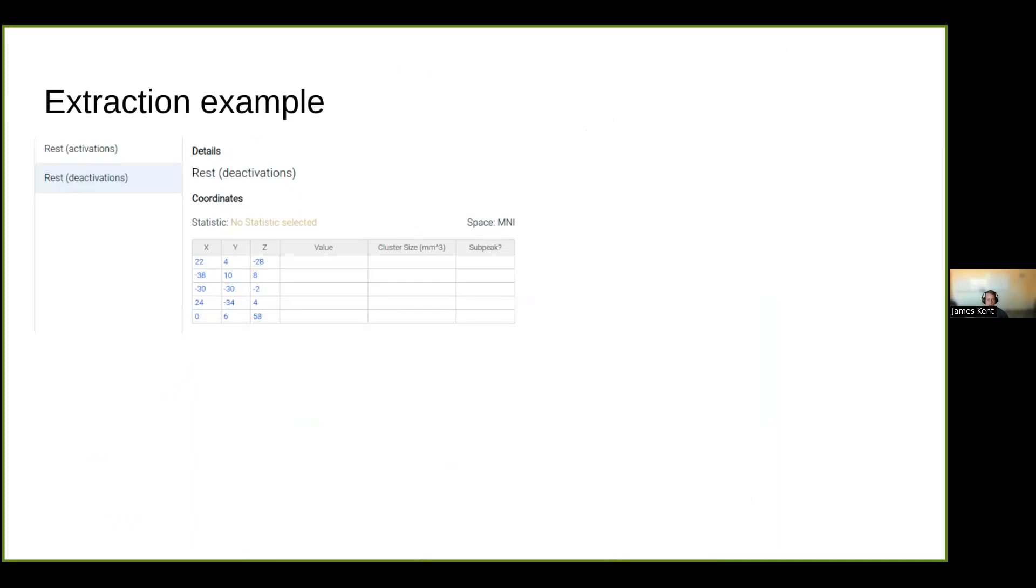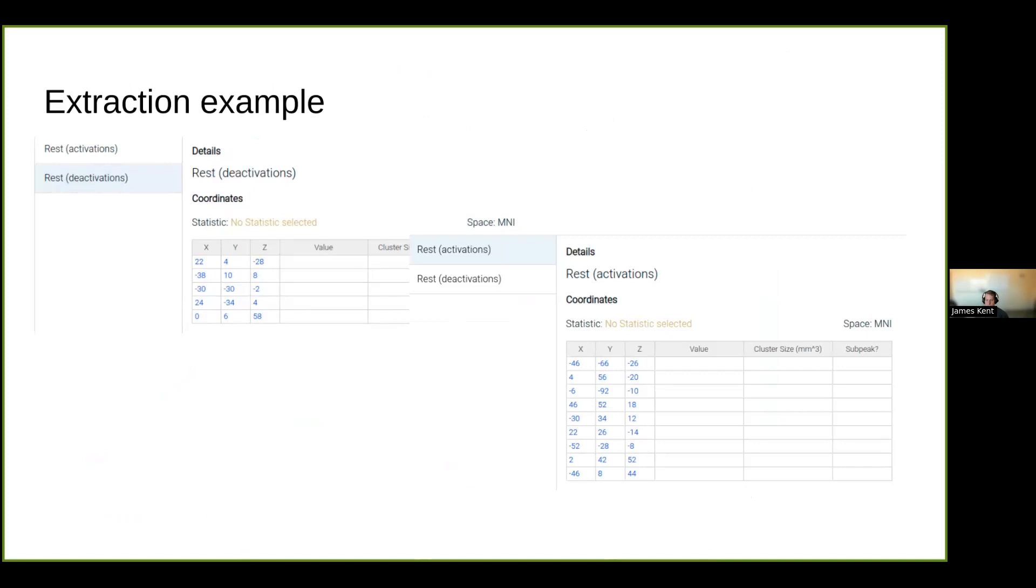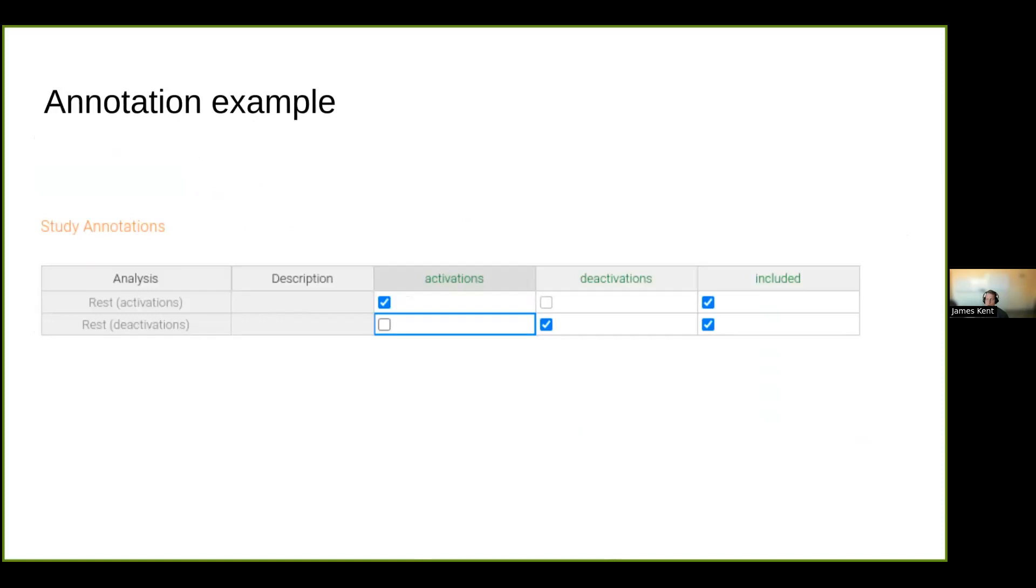So here's an extraction example where I've created two analyses where we see rest deactivations and rest activations with the coordinates reported in the table here, and we have rest activations as well. So we can see that the tables are separated based on whether the coordinates represent a deactivation relative to a baseline or an activation relative to a baseline. And subsequently, we can label that with our annotations to say that the activations condition fits with the activations label and the deactivations condition or contrast fits within the deactivations label. So rest activations is analysis and rest deactivations is analysis, and they can be labeled with the activations and deactivations labels respectively.